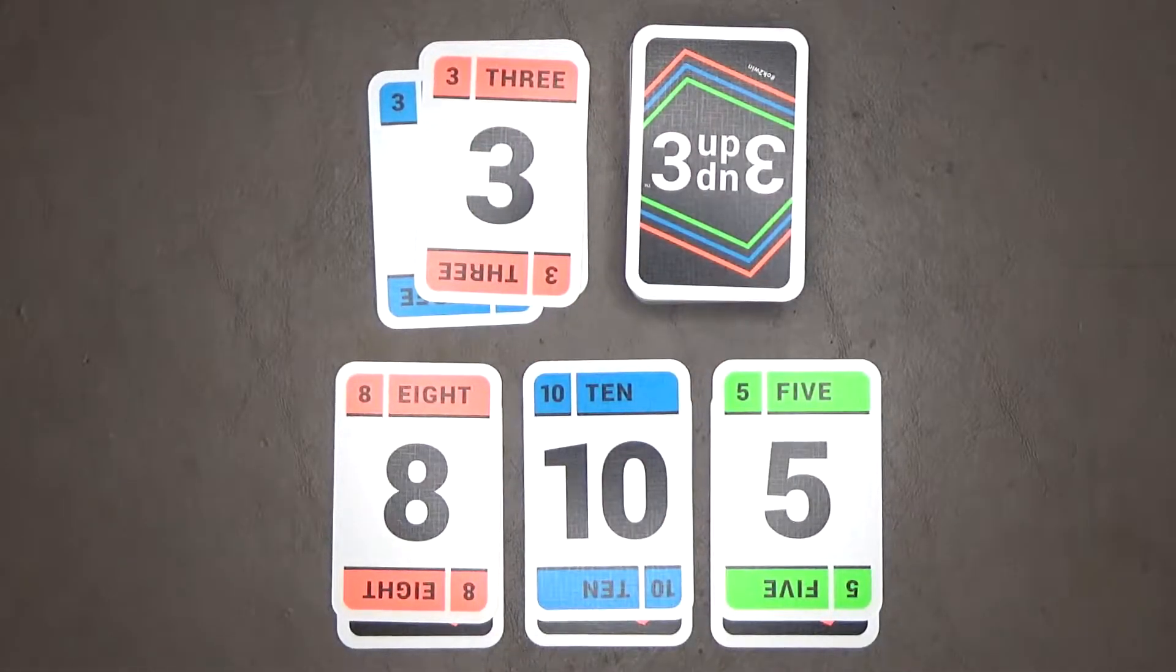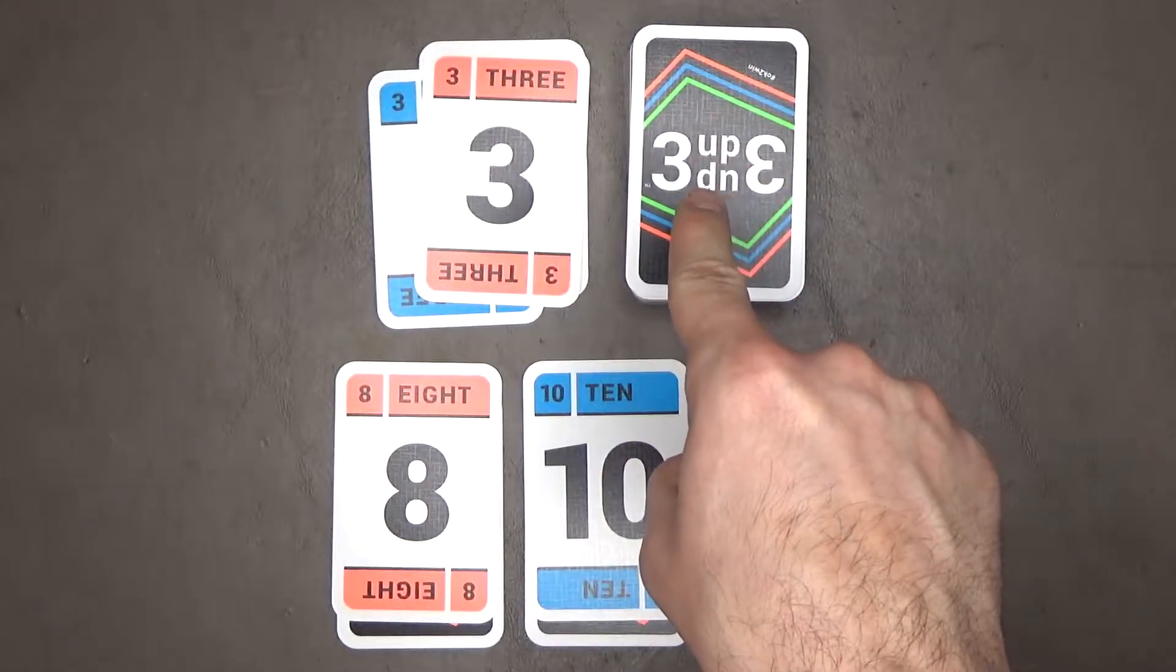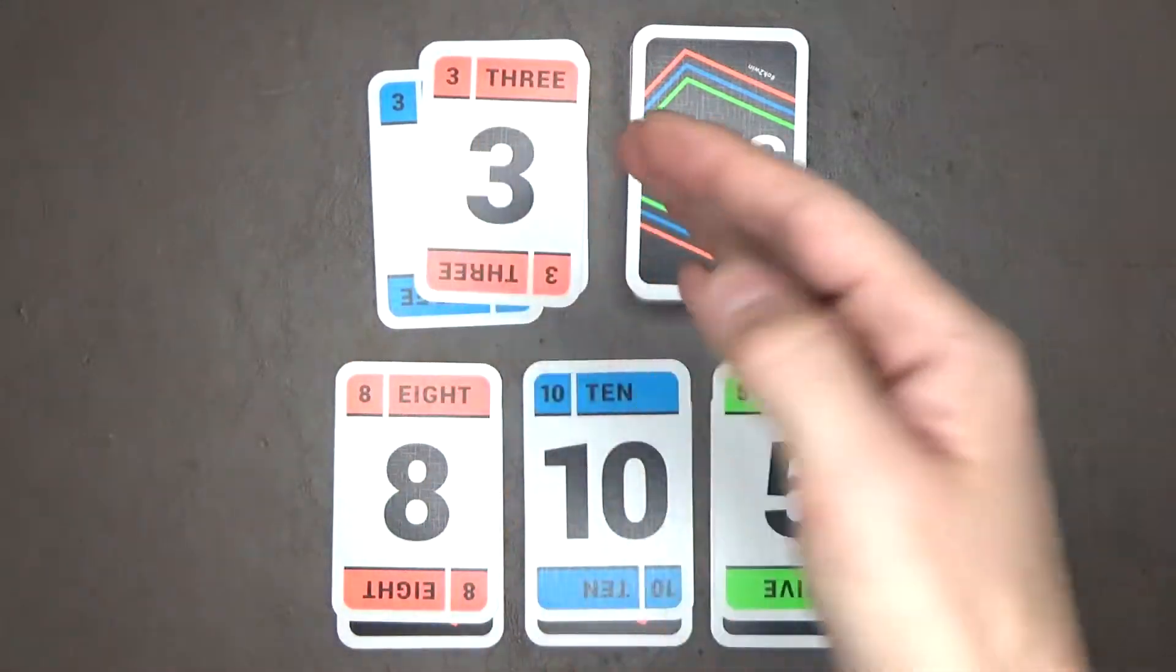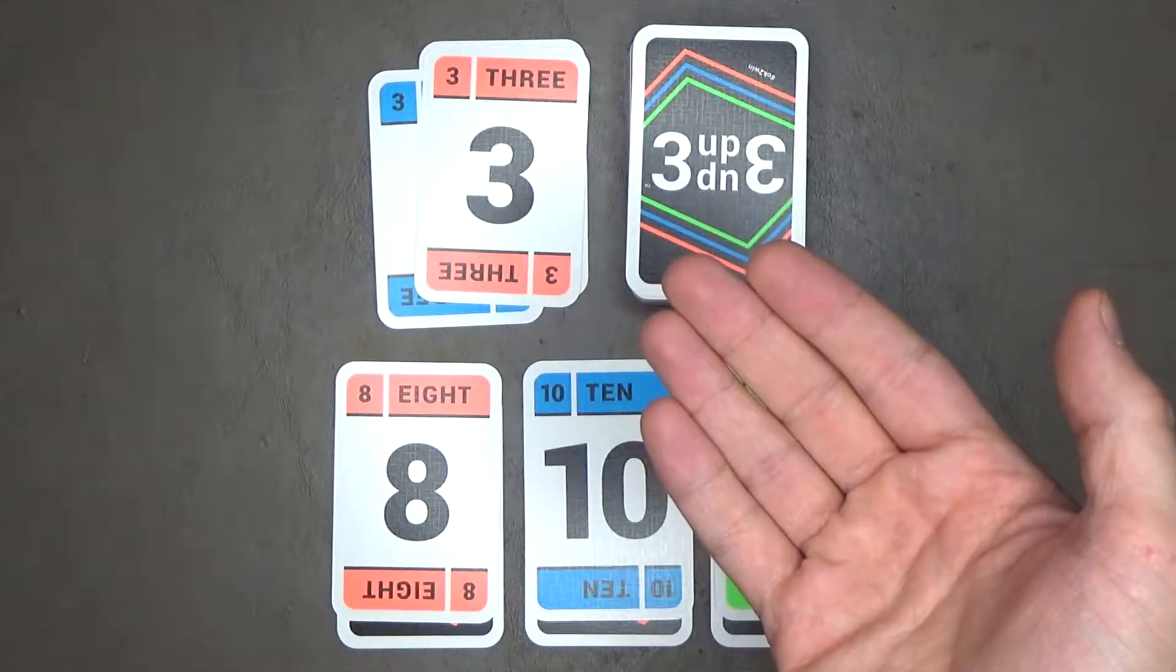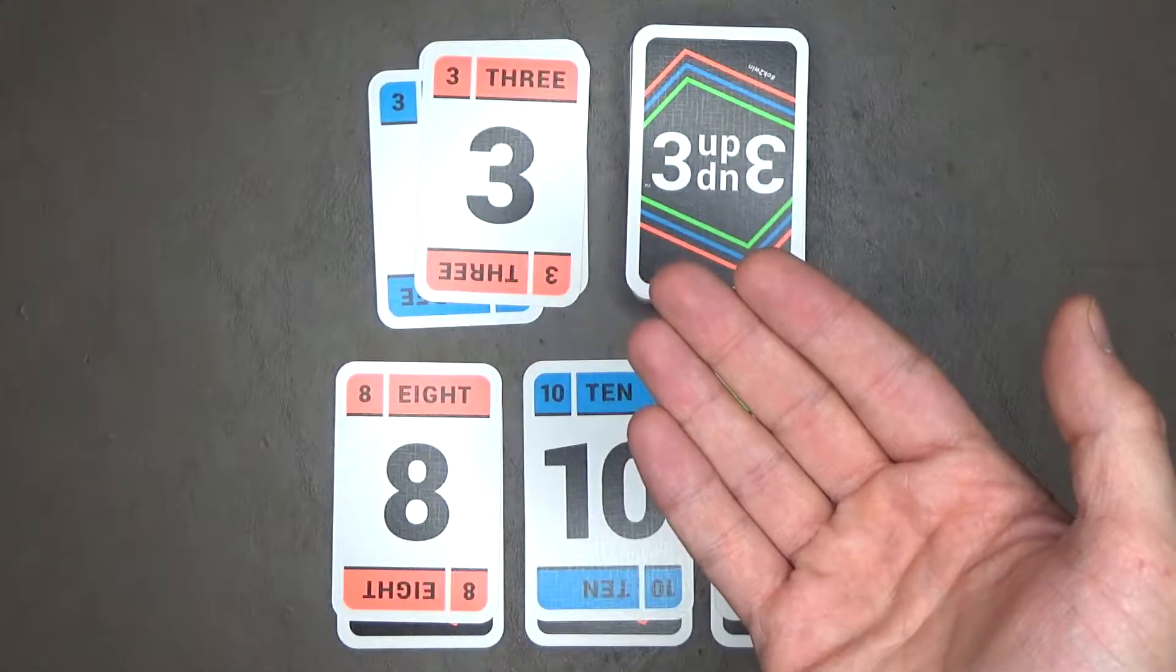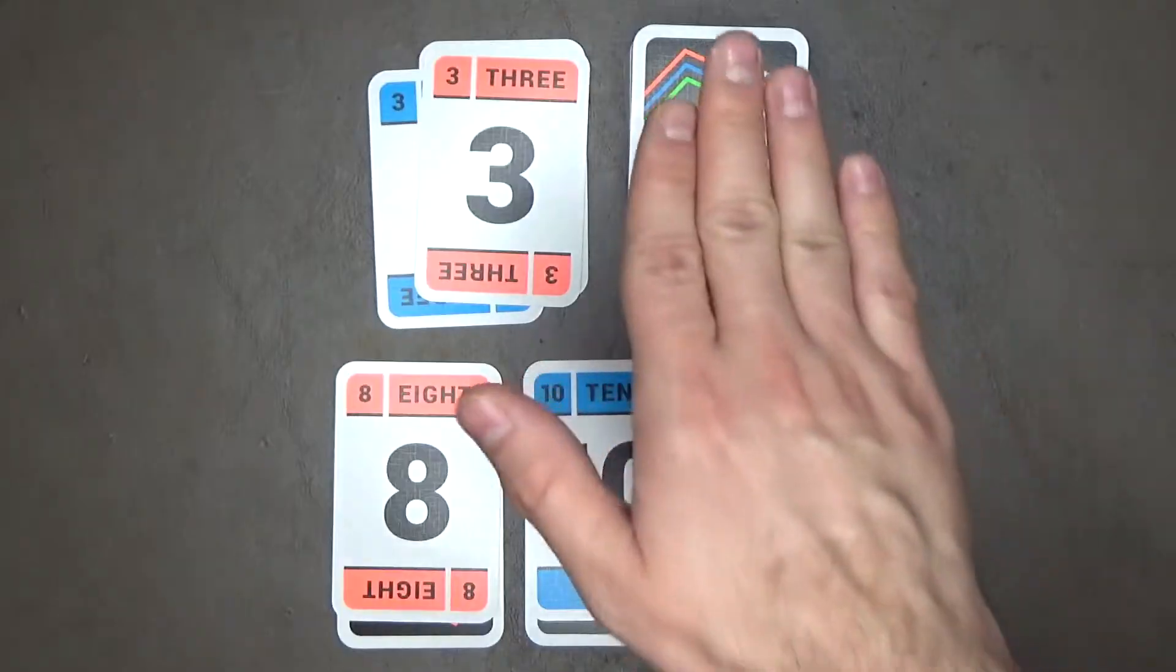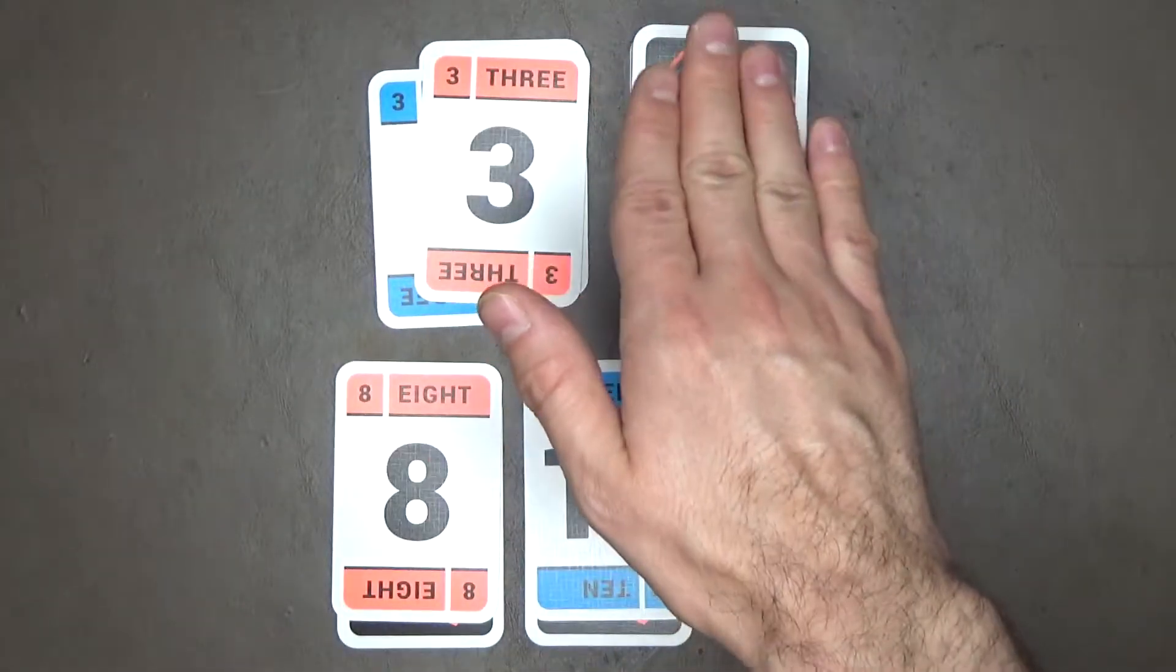When your turn is over, draw cards from the draw pile until you have 3 cards in your hand. There are instances that you are going to have more than 3 cards in your hand when your turn is over. And in that case, you don't draw cards from the draw pile.